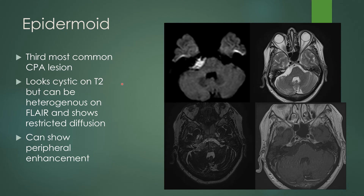The third most common lesion at the cerebellar-pontine angle is the epidermoid. It can look cystic and subtle on T2 — appearing as a prominent extra-axial CSF space with some mass effect — but can be more heterogeneous on FLAIR. On thin-cut T2-weighted IAC images, you see more heterogeneous signal rather than homogeneous hyperintensity. There can be some peripheral enhancement but usually not much. The key is DWI: there is restricted diffusion within an epidermoid, whereas an arachnoid cyst is hyperintense on T2 but shows no restricted diffusion — that sequence differentiates the two.